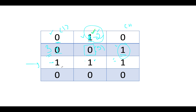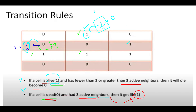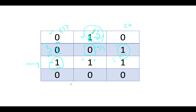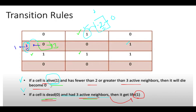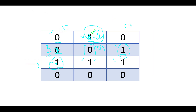Moving to the next row, we see one. Counting the active neighbors, that would be equal to one. Since there is only a single active neighbor for this particular cell, we should transition the state to minus two, because it should become dead as per this rule. So this gets updated to minus two.